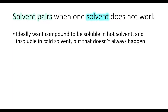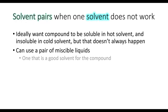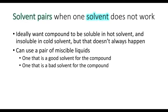Ideally we want the compound to be soluble in hot solvent and insoluble in cold solvent, but we don't always get that lucky. So if this doesn't work, we could use a pair of miscible liquids as the solvent — one liquid that is going to be a good solvent for the compound, meaning the compound dissolves really well in it, and a second solvent that would be a bad solvent, meaning the compound does not easily dissolve in it.